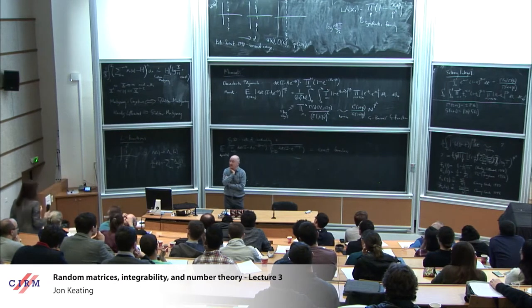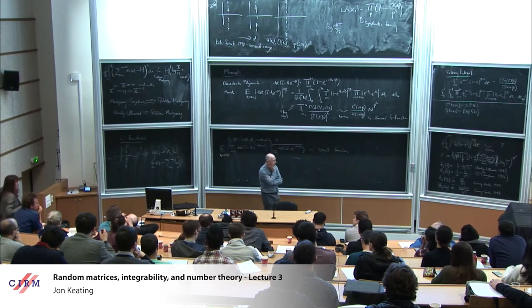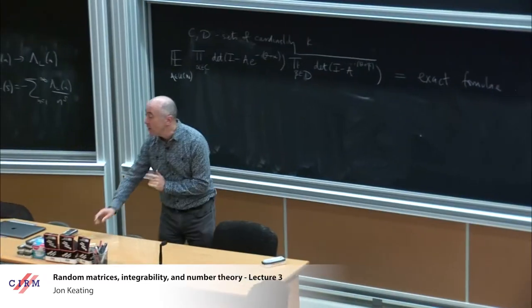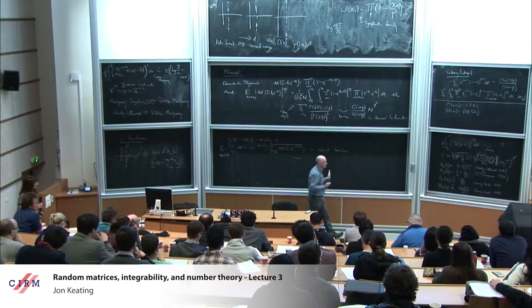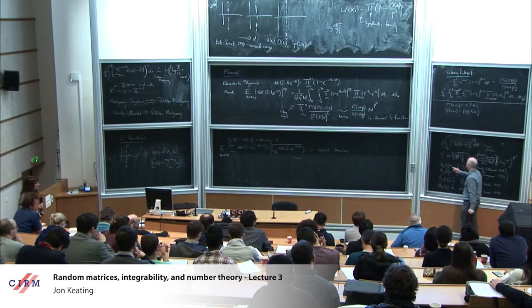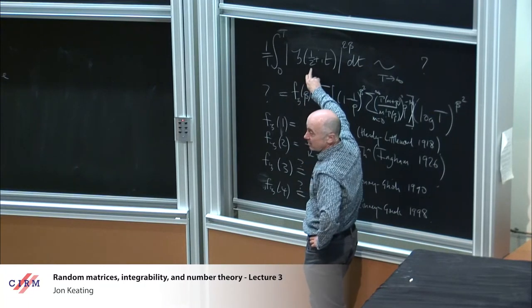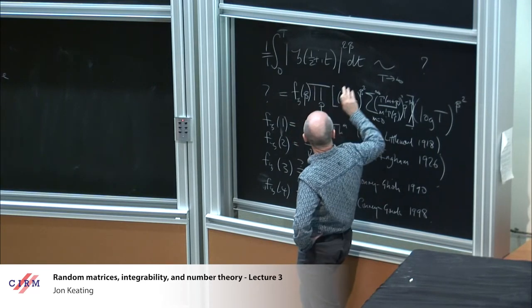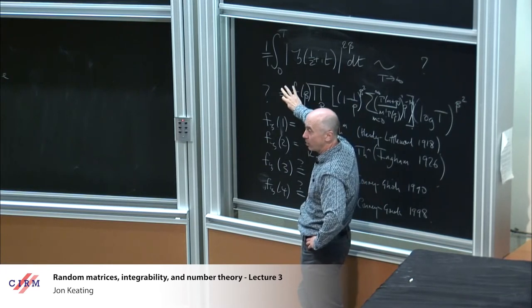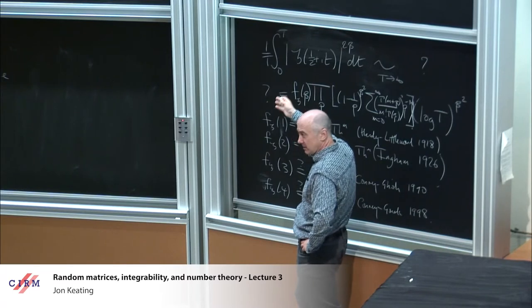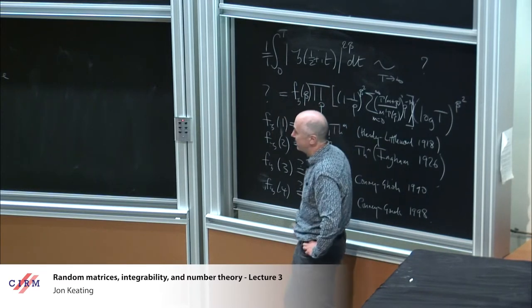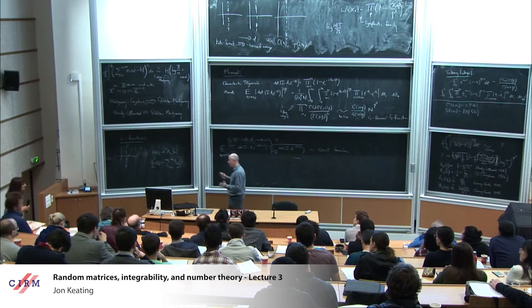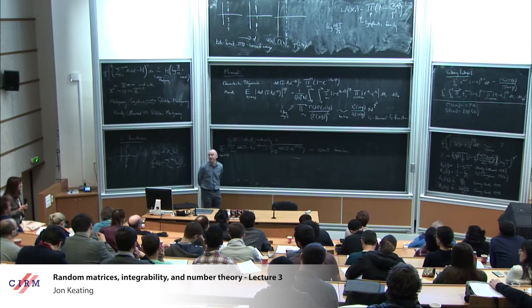Crudely speaking, if you were to substitute the Euler product for the zeta function and assume the primes are independent of each other — so you can interchange the average and the product over primes — you're basically led to the formula with f=1. Almost certainly that's what Hardy and Littlewood did when they framed the conjecture originally. So f measures correlations between the primes in a way that random matrix theory captures.